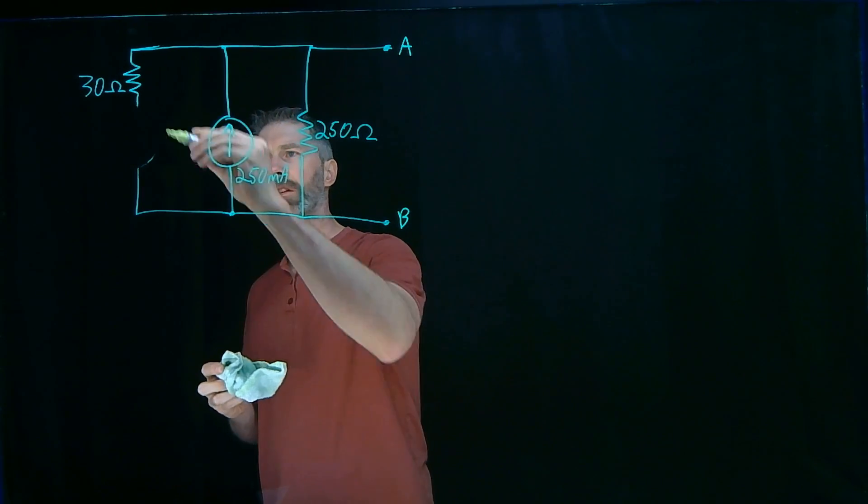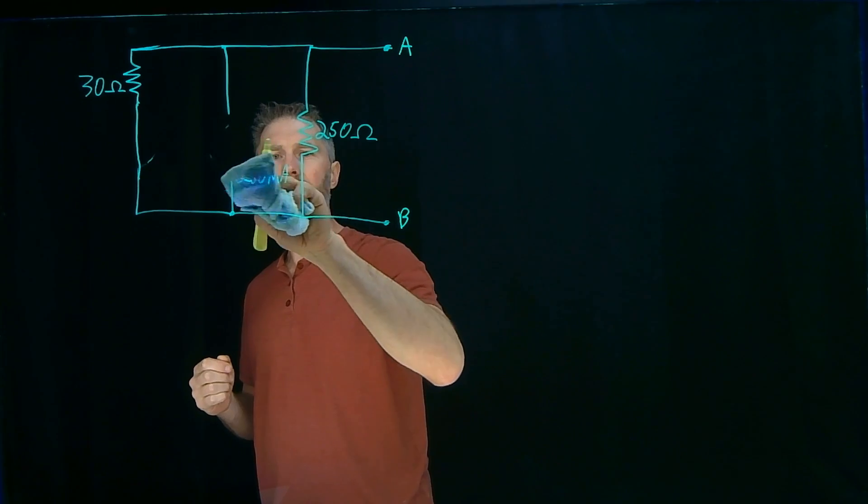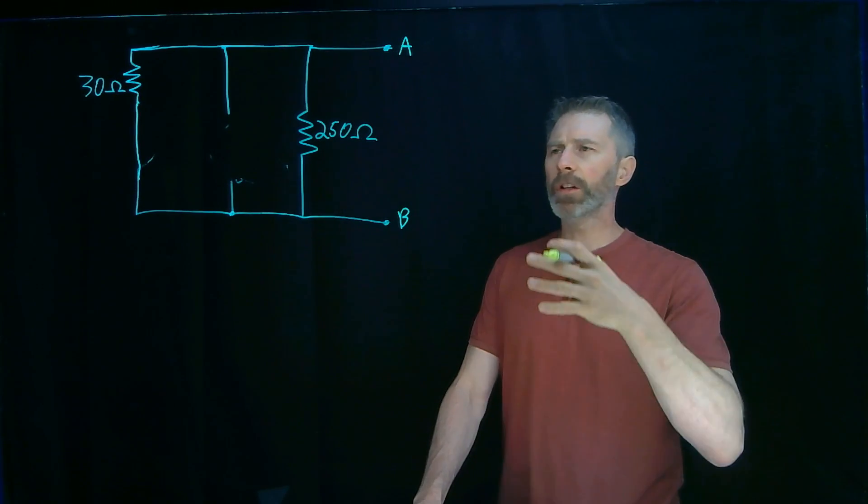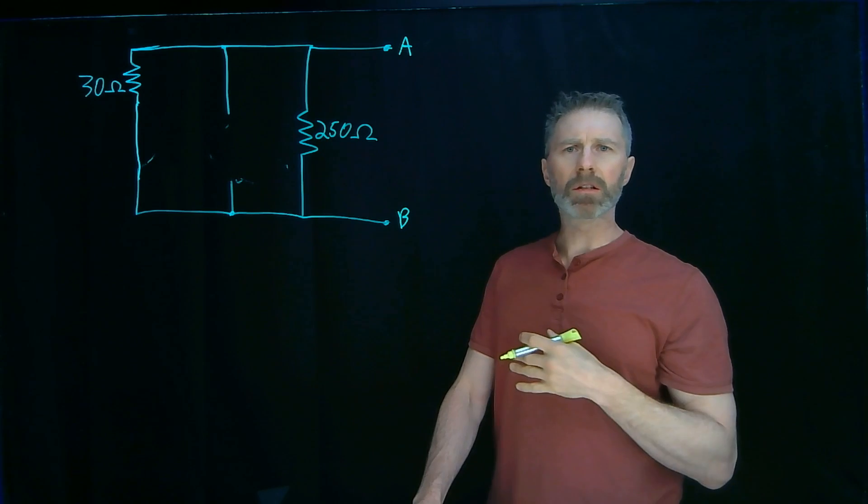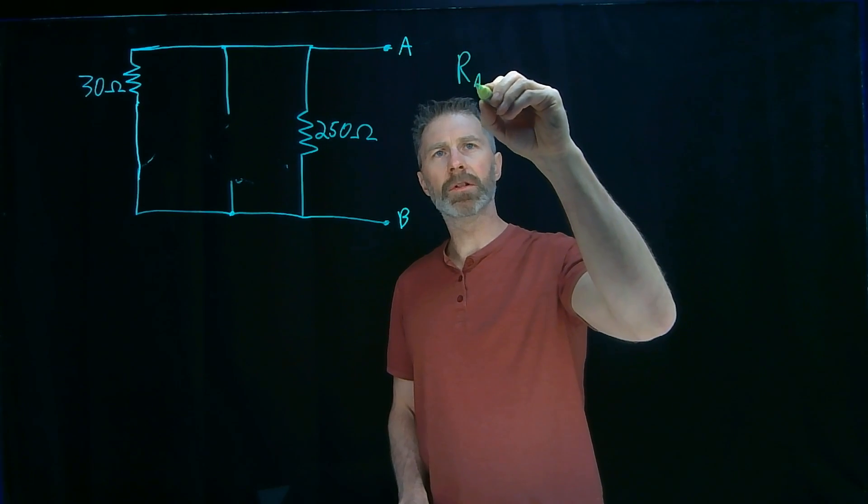So this becomes a short circuit and this becomes an open circuit. Once I've done that, I figure out what is the equivalent resistance looking into A and B. In this particular circuit, that's a fairly simple calculation.